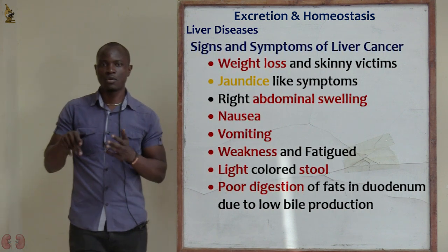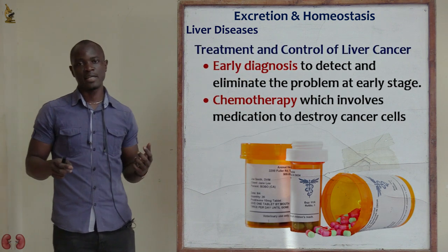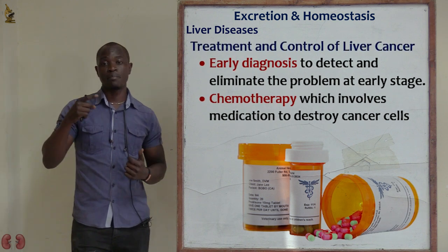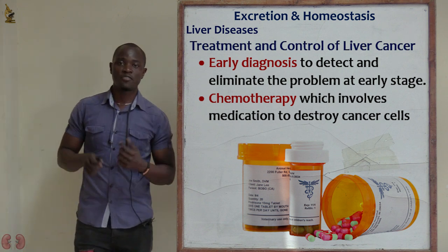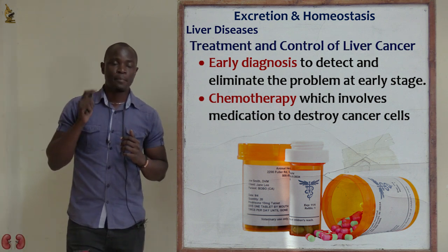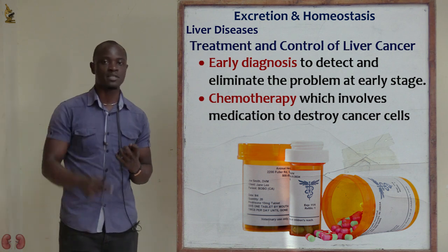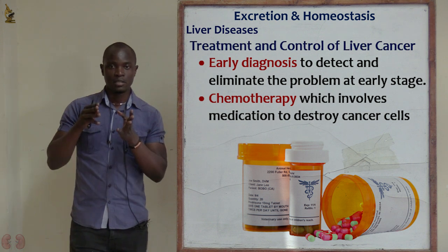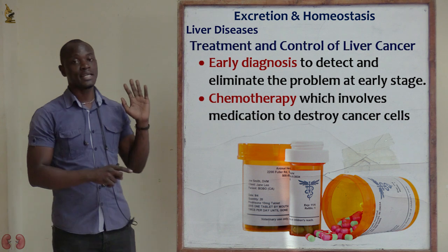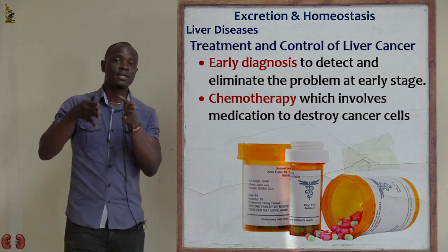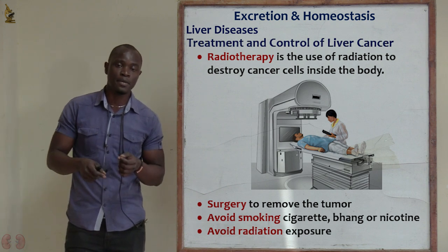For treatment of liver cancer: early diagnosis is essential, because if cancer is detected early it can be eliminated and may not return. Chemotherapy involves giving the patient medication — tablets taken multiple times daily — to control and destroy the cancerous cells. The word 'chemo' comes from chemicals. Radiotherapy uses radiation: the patient is placed inside a machine that targets the affected organ and shoots lasers at the tumor to destroy it from inside the body.